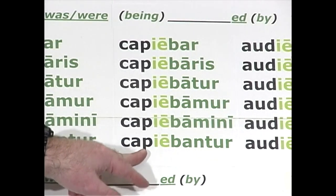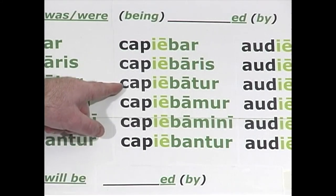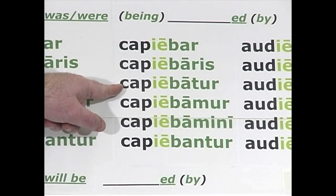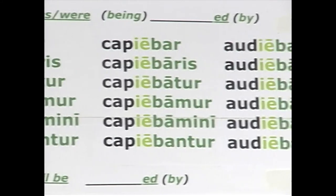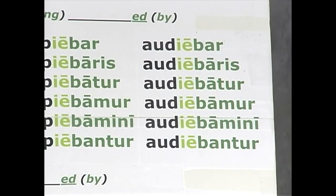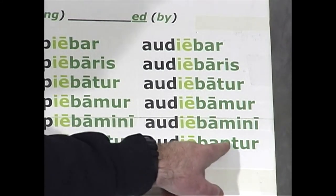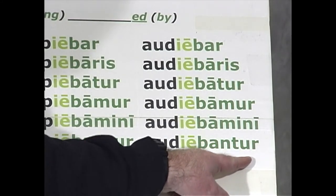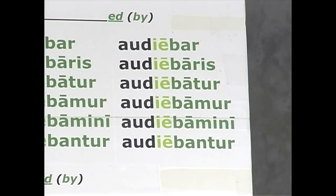How do we translate capiebantur? They were being captured. How about capiebatur? He or she or it was being captured. And then the fourth conjugation, audio, audire — same pattern: audiebar, audiebaris, audiebatur, audiebamur, audiebamini, audiebantur. So that's the imperfect passive indicative.